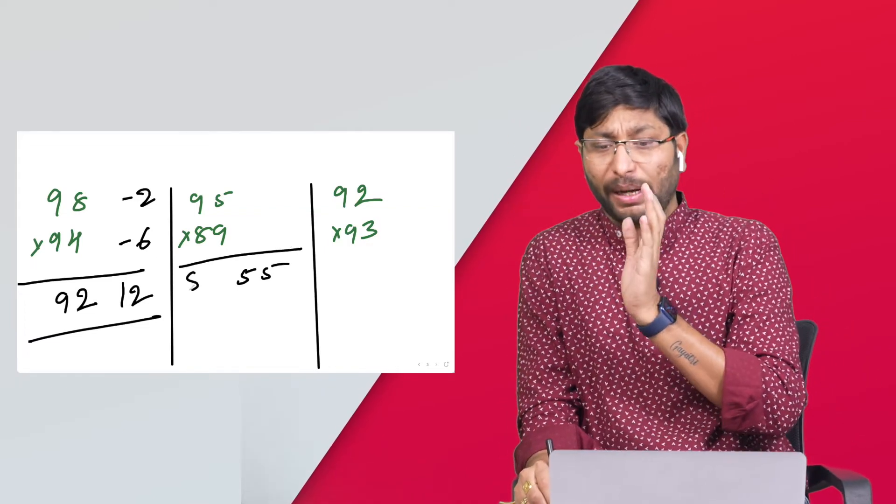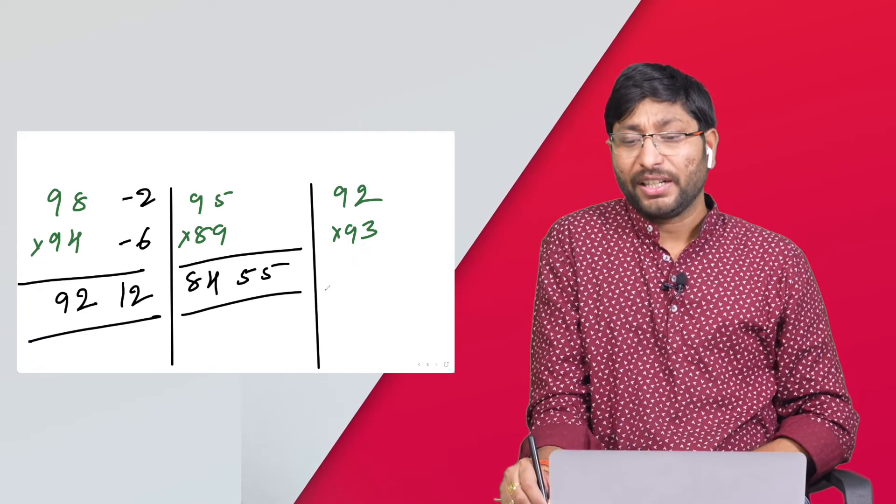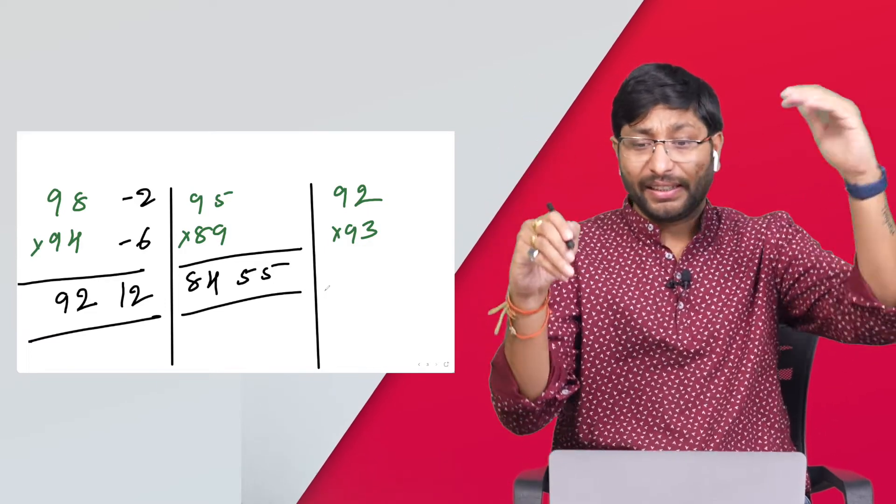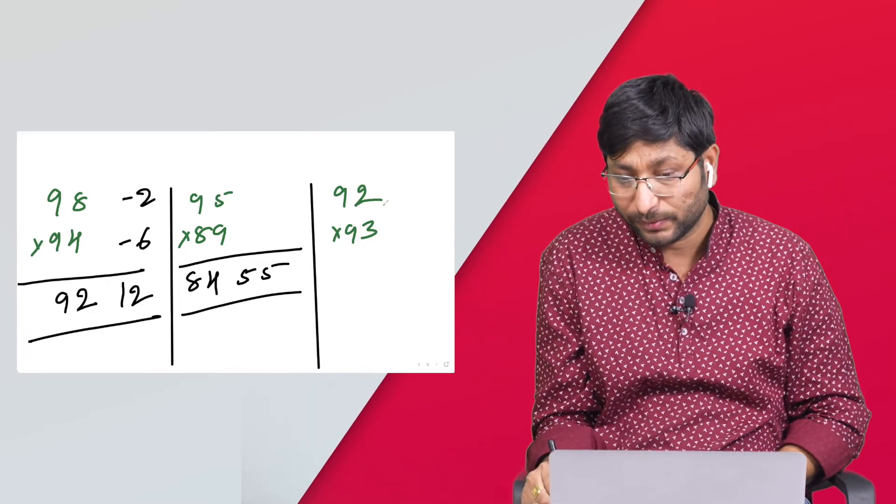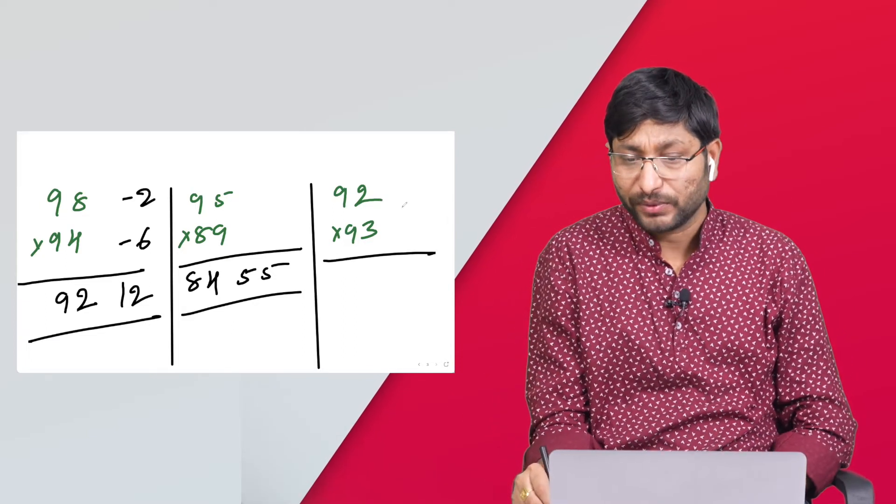Minus 8, minus 7. 7 times 8 is 56, and left hand side 93 minus 8, or 92 minus 7, that is 85. That's it. Hope you understood.